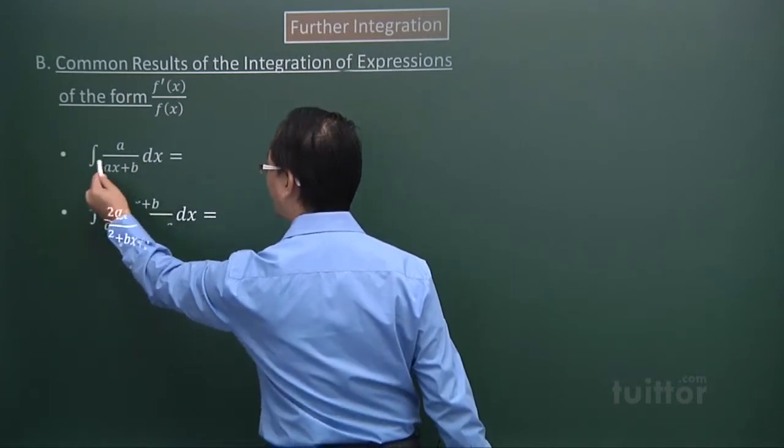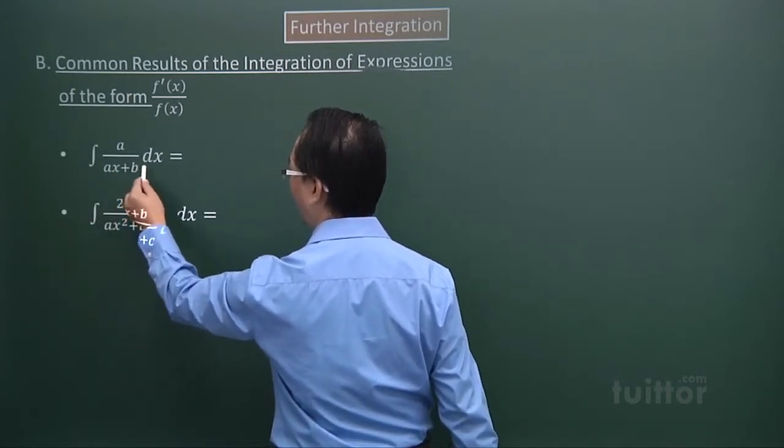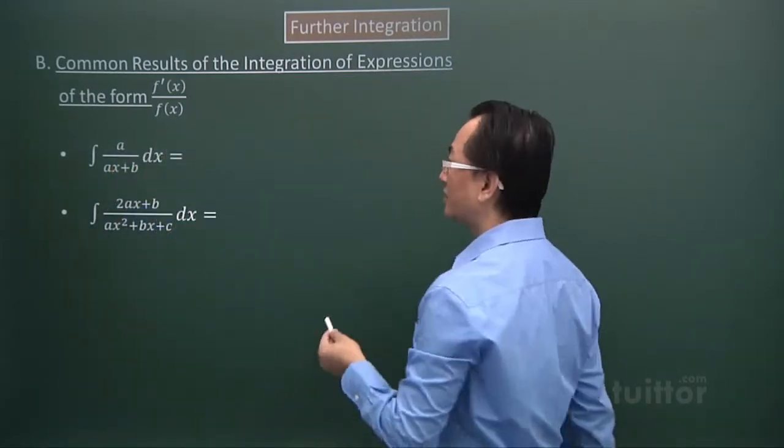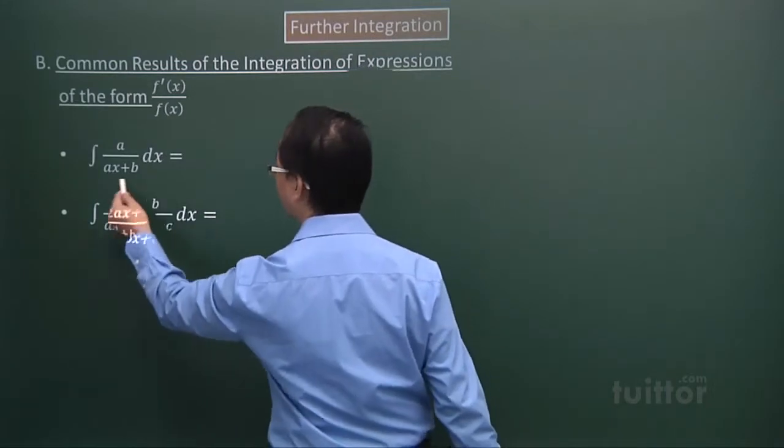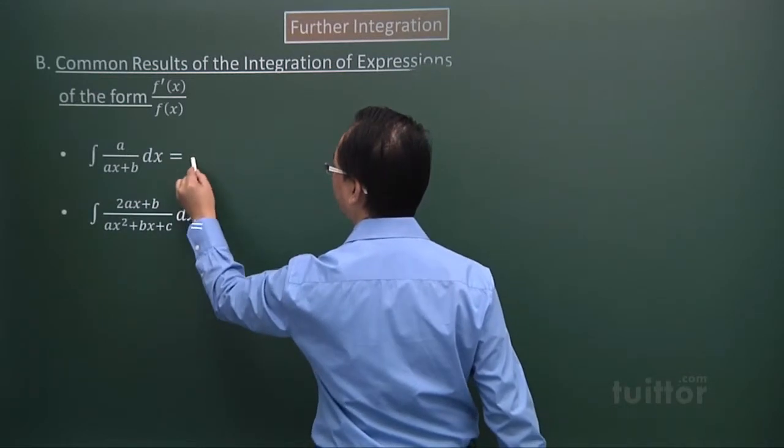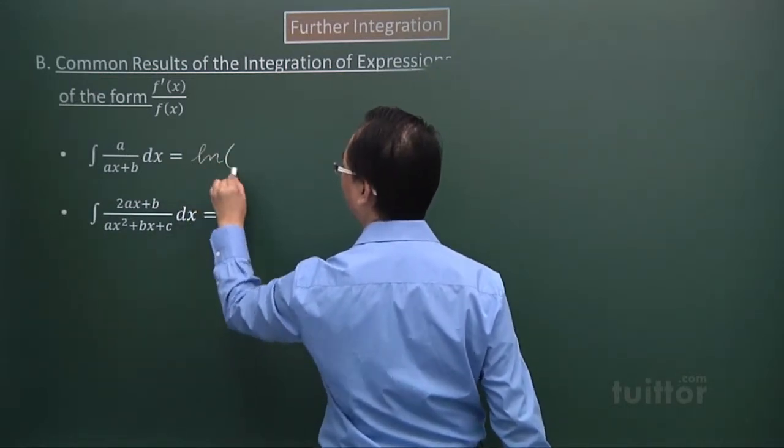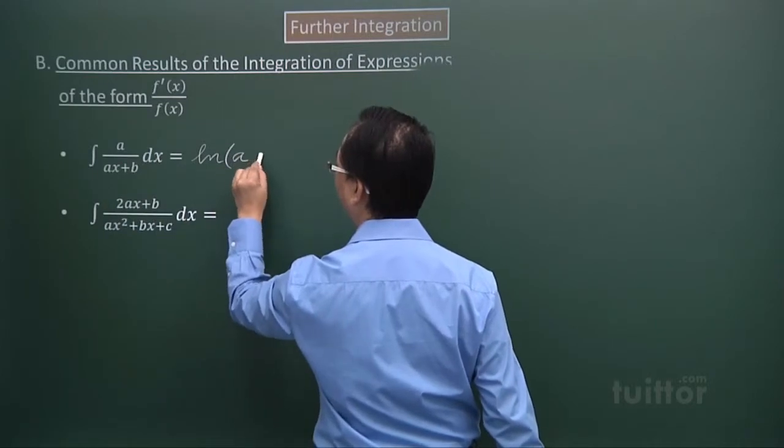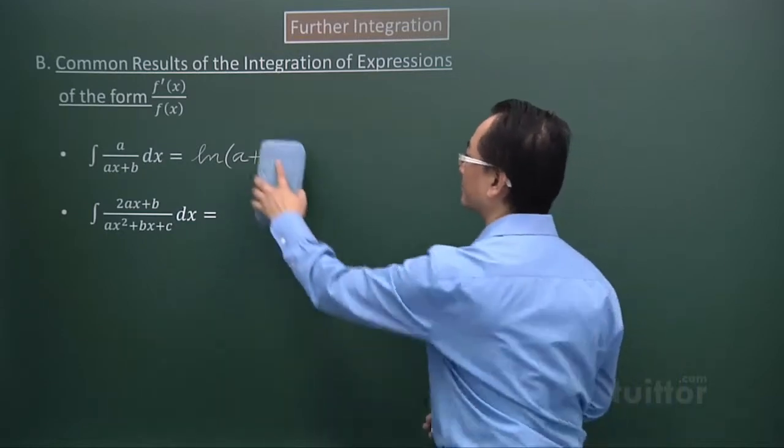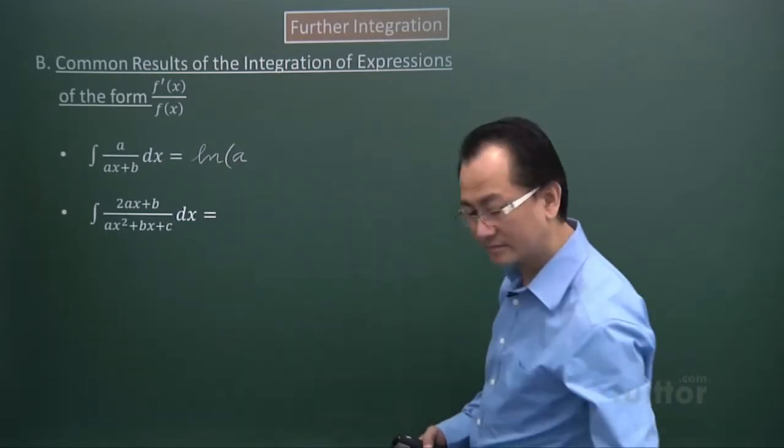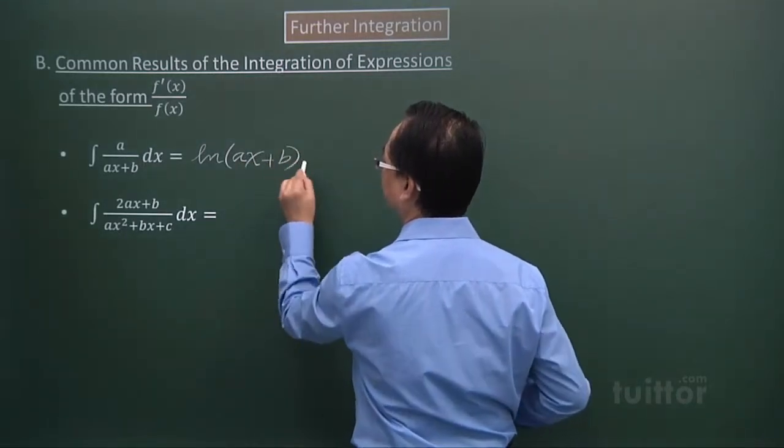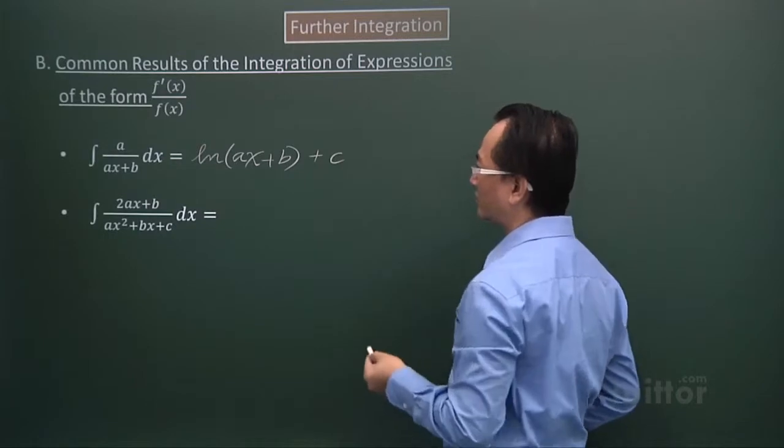So if I differentiate that expression, I have a. So you look at the numerator expression, that's a. So they're connected in this way. If this is f(x), this will be f'(x). So the result will be ln, bracket, whatever I have for the denominator expression, and then plus the arbitrary constant.